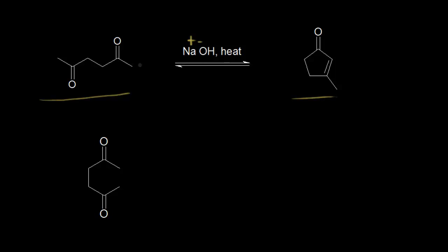Let's go ahead and number our dione. It's symmetrical, so we could start from either side — carbon one, two, three, four, five, and six — so we have 2,5-hexanedione. If we add sodium hydroxide, we're going to deprotonate at the alpha carbon, so I need to find my alpha carbons: that's the carbon next to the carbonyl. Carbon one could be an alpha carbon, carbon three could be an alpha carbon, and since it's symmetrical, we just need to focus on the possible alpha carbons at one and three.